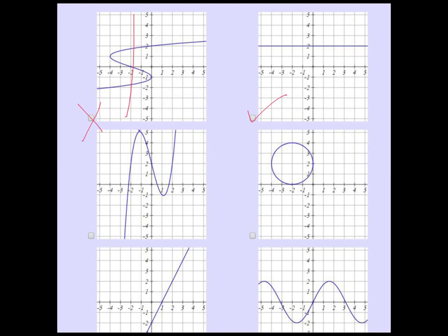The second one is a function. There's no place that I could draw a vertical line and cross twice. So this trigonometric function that's graphed here is fine.